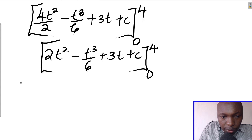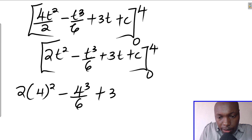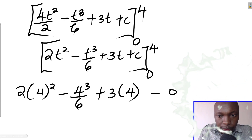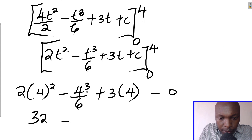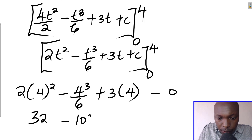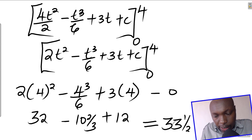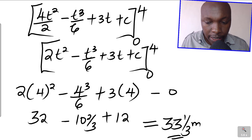Substituting t = 4: 2(4²) minus 4³/6 plus 3(4) = 32 minus 64/6 plus 12. That gives 32 minus 10⅔ plus 12, which equals 33⅓ meters. Substituting t = 0 gives zero, so the distance covered by the body to attain maximum velocity is 33 and one-third meters. Thank you so much.